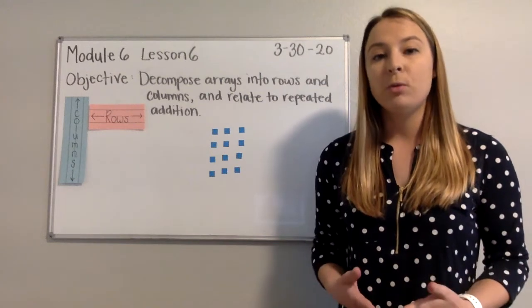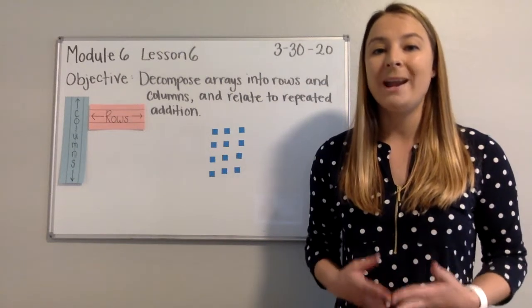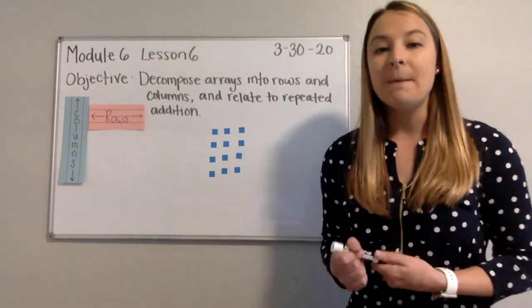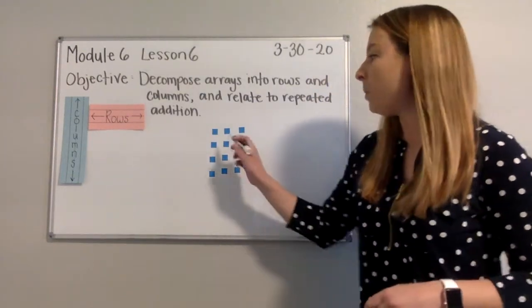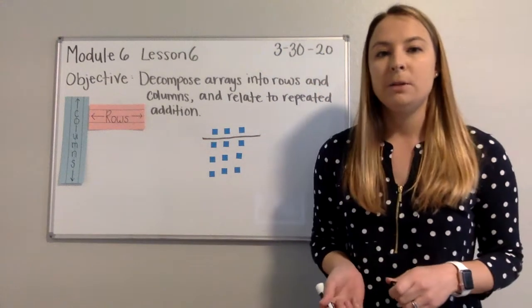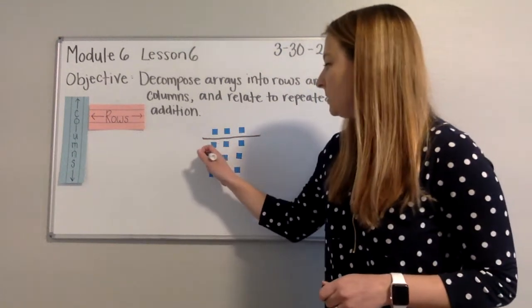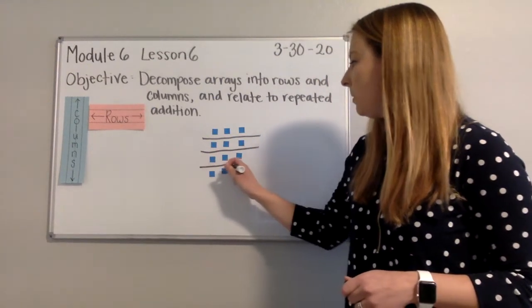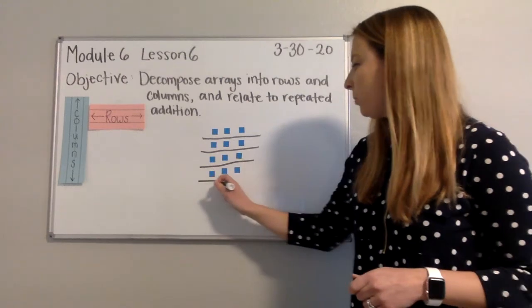Because I made four rows of three, I really want to point out the different rows. So I'm going to go ahead and separate my rows with a line. So I'm going to take the first row and I'm going to separate it just by drawing a line between the first row. So I'm going to do the second row, the third row, and the fourth row.